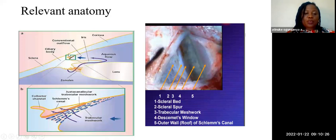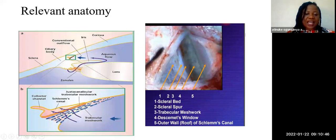This small box represents the angles, magnified. We have the trabecular meshwork, which has three parts: the uveoscleral part, corneoscleral part, and the juxtacanalicular part. The area of greatest resistance is at the level of the juxtacanalicular trabecular meshwork. Resistance to flow of aqueous at this point, due to aging and other primary factors, leads to the development of primary open-angle glaucoma.